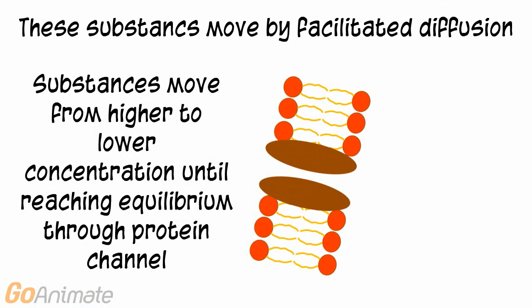We can say that these substances move by facilitated diffusion. In facilitated diffusion, substances move from higher to lower concentration until reaching equilibrium, but through a protein channel.